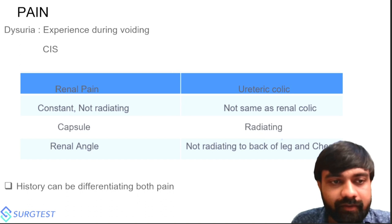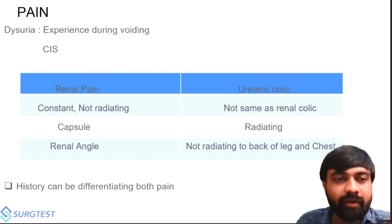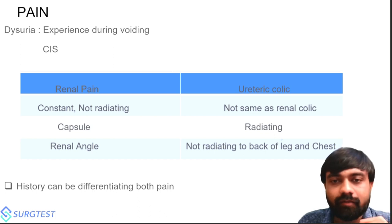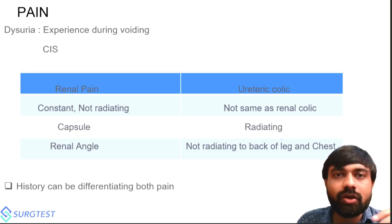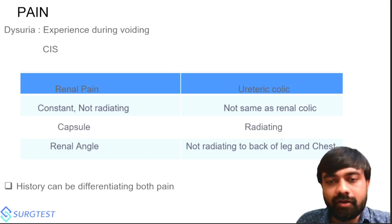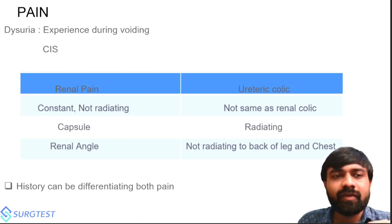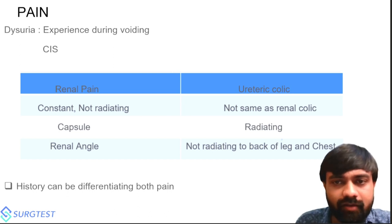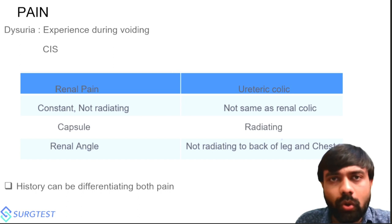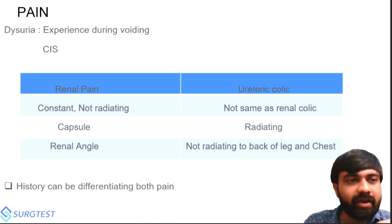Renal pain is constant, while ureteric pain is colic in nature — intermittent, on and off. Renal pain is not radiating, but ureteric colic is radiating. Importantly, ureteric colic does not radiate to the back of the leg or the chest — these are potential MCQ points. Renal pain is felt at the renal angle and is caused by inflammation or infection of the parenchyma. Ureteric colic occurs when obstruction by a stone or blood clot causes distension of the ureter.